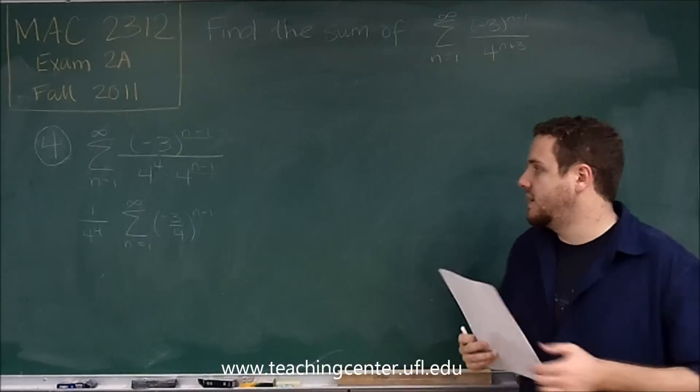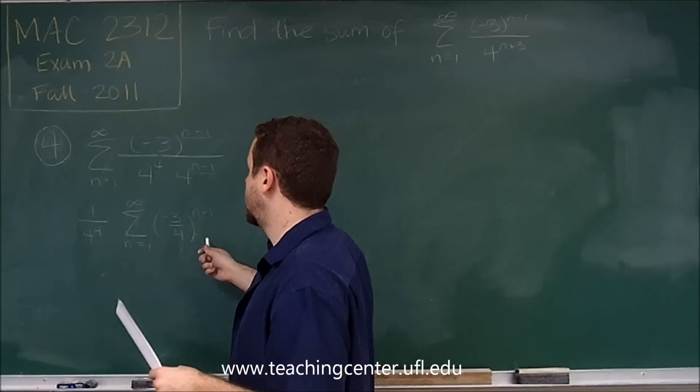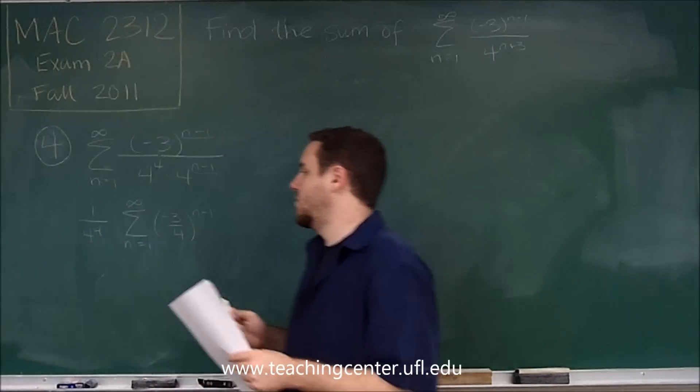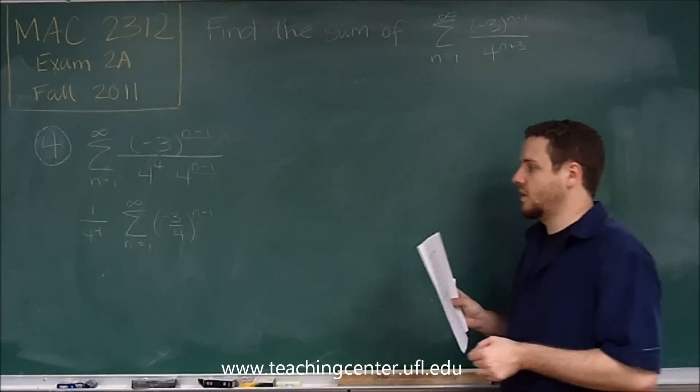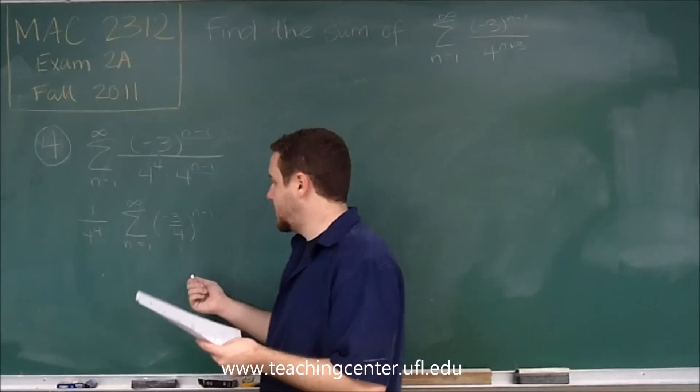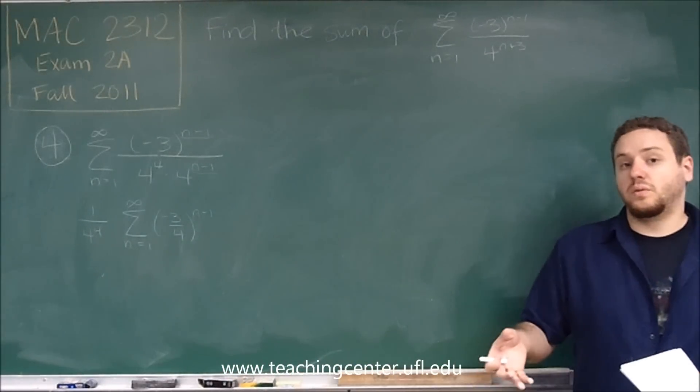So this is exactly what we need, because now this is a geometric series, and we have this one over four to the four out front. So we need to just figure out what's the sum of this series, and then we can just multiply it by one over four to the four.